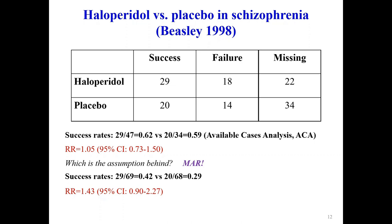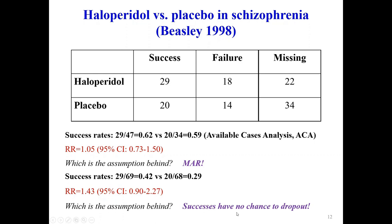If all missing participants are failures, the success rates would be 29/69 for haloperidol and 20/68 for placebo. The risk ratio becomes 1.43, which is clinically more significant than 1.05. But the assumption is that successes have no chance to drop out. There is also a problem that you are making up data, treating missing participants as if observed, without incorporating uncertainty about the imputation.